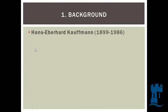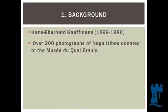We're going to be looking at pictures taken by the German anthropologist Hans Eberhard Kaufmann in the 1930s. He was an anthropologist who travelled to India and took pictures of Indian people. One of the few things I found out about him is that he was quite a strong fascist supporter and he created a fascist group in Switzerland in the 1930s. He donated, in the 1970s, over 200 photographs of the Naga tribes — which are tribes from Northern India — to the Musée du Quai Branly, where I found them this summer, and as far as I'm aware, I'm the first person to have ever studied them.